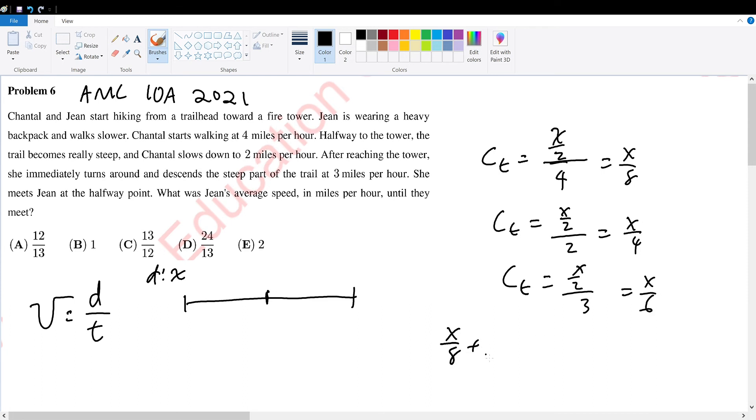Now we sum them up, and we will get the total amount of time that it took Chandler to walk her path. Combine these two first, 3x over 8 plus x over 6. Combine these two, we get 48 and then 26x. Simplify, we get 13x over 24.